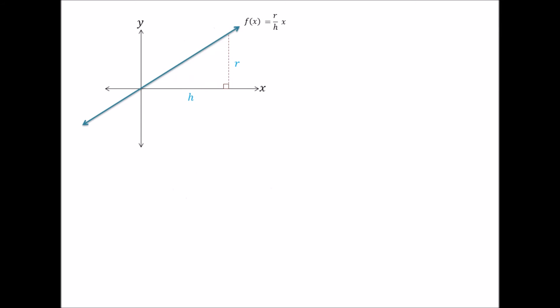But similarly for our disk method, if we replaced our instantaneous strip with an instantaneous cylindrical disk of radius f(x) and height dx, which has instantaneous volume dV = π[f(x)]²dx, because the volume of this cylinder is π times height times radius squared. Integrating from the origin all the way to x = h this time, we will get the volume of our cone.